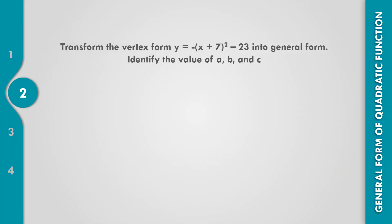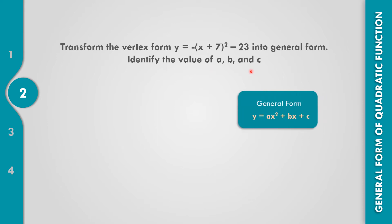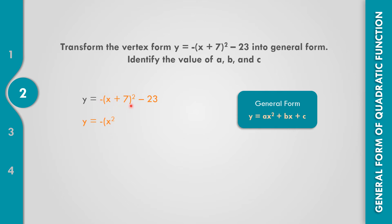For example number 2, transform the vertex form y equals negative the quantity x plus 7 squared minus 23 into the general form, and identify a, b, and c. We copy the given and distribute the parentheses: x times x is x squared, x times 7 is 7x times 2, giving positive 14x, and 7 times 7 is 49. Then bring down negative 23.